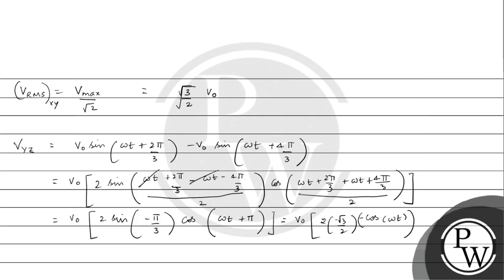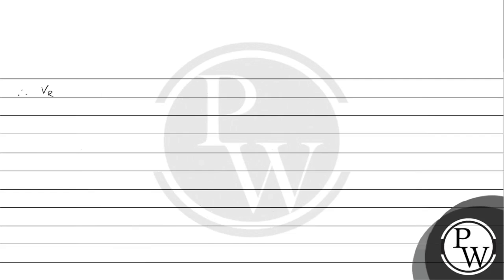The minus signs cancel, and we get Vyz = √3 V₀ cos(ωt). This is again the maximum value √3 V₀. Therefore, the RMS value between terminals Y and Z is Vrms = Vmax/√2 = √(3/2) · V₀, which is the same result as for X and Y.